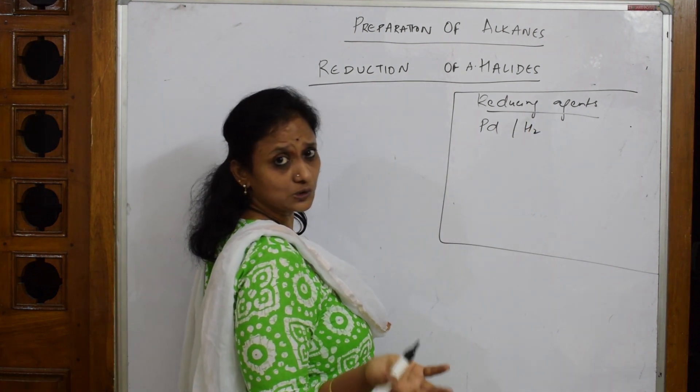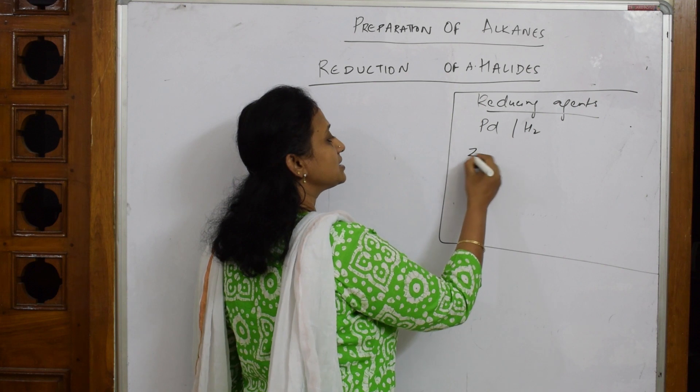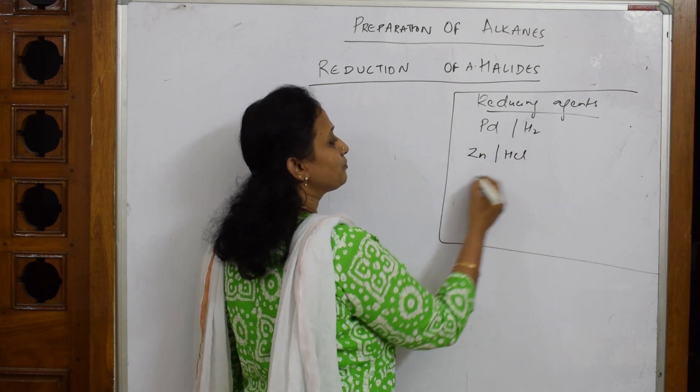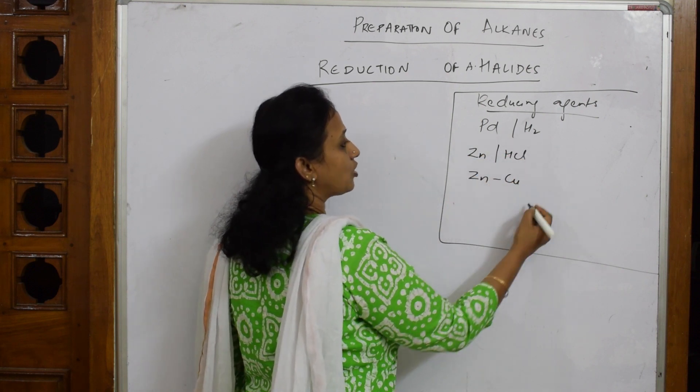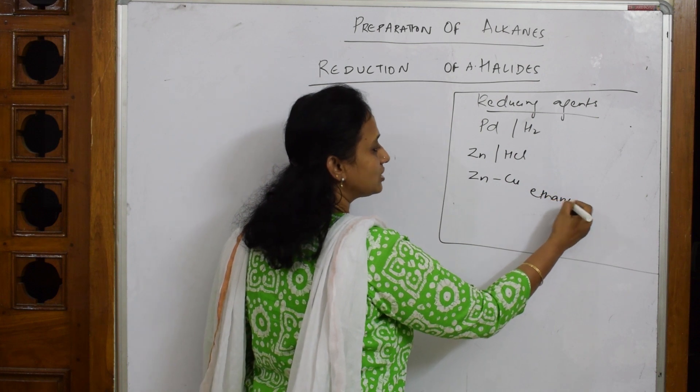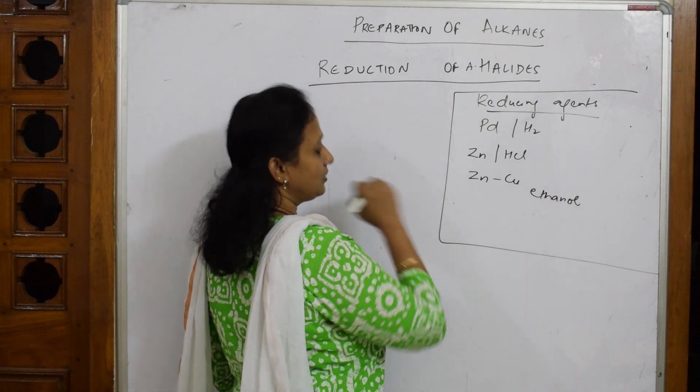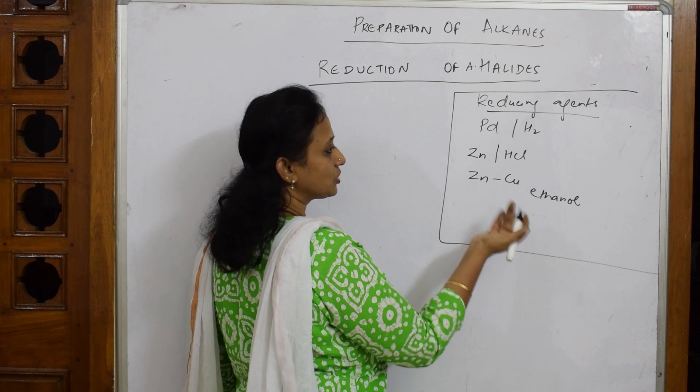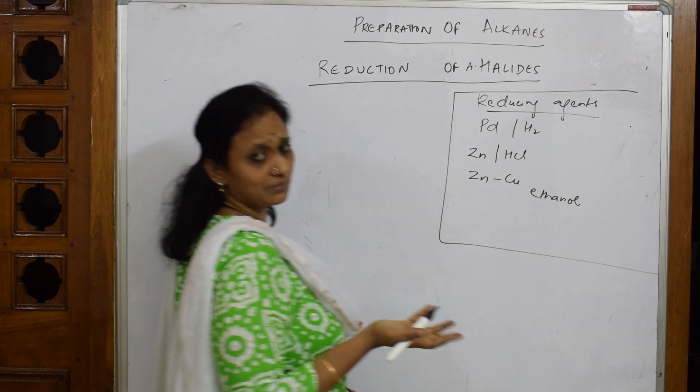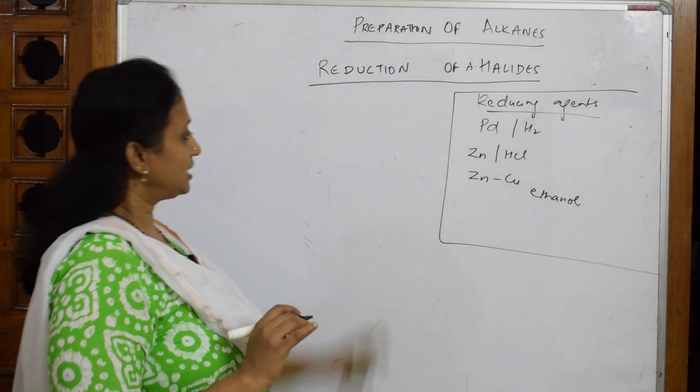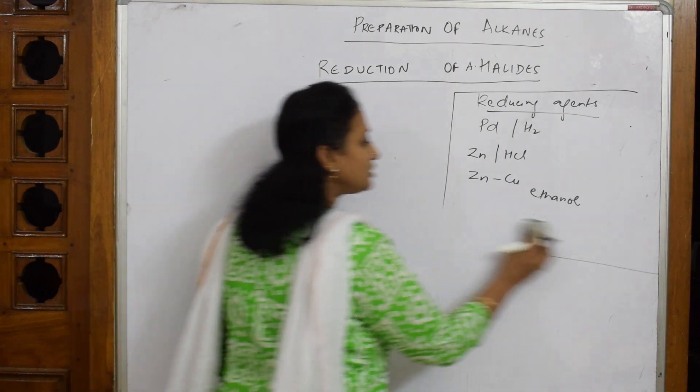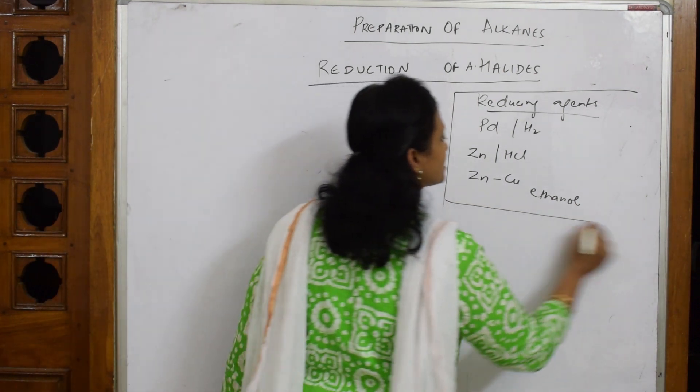What are the different reducing agents? It can be palladium in terms of hydrogen, or it may be Zn in terms of HCl, or zinc in the presence of copper and ethanol - this we call it as zinc couple. You can also use platinum, palladium - I have written all the combinations.